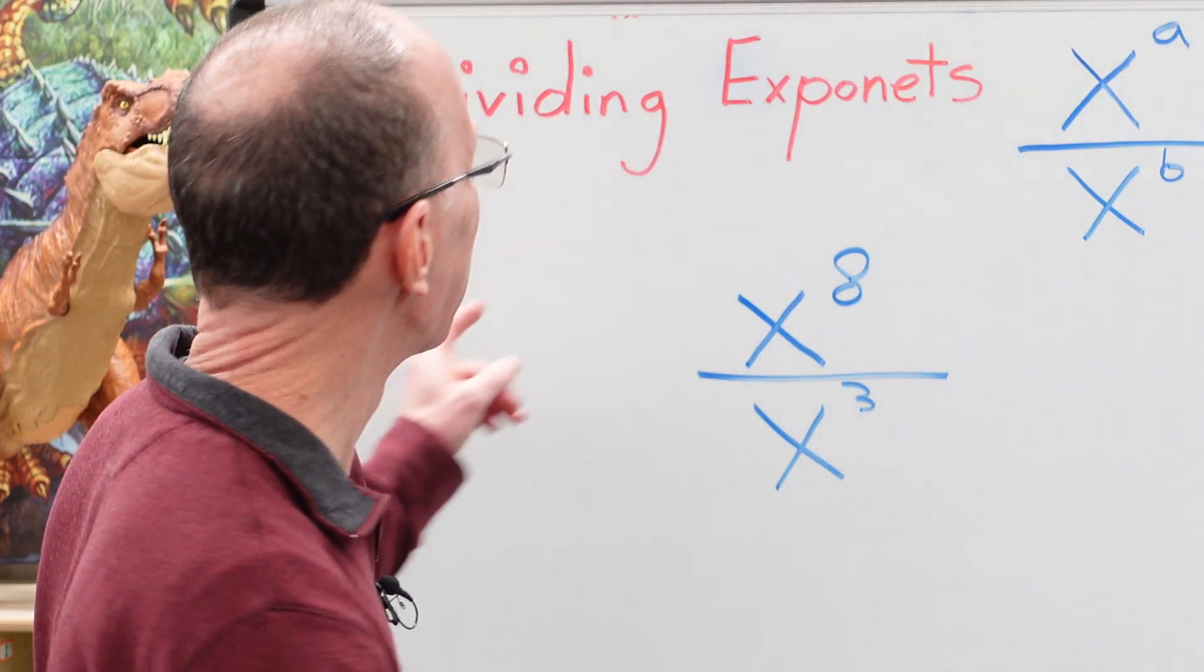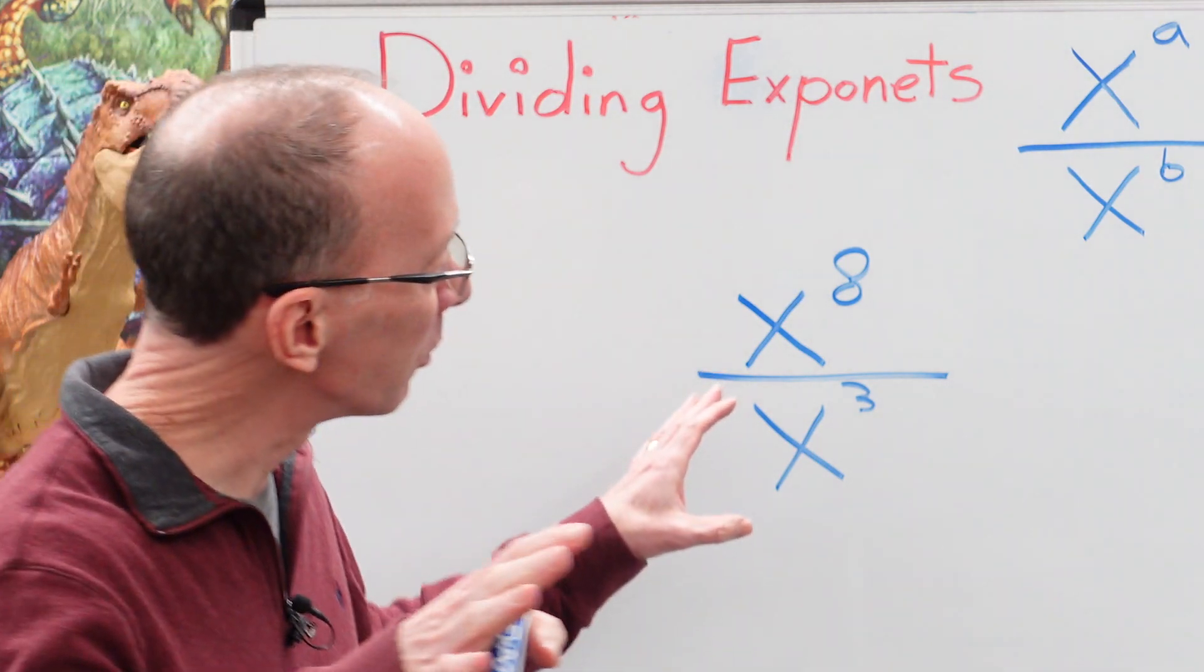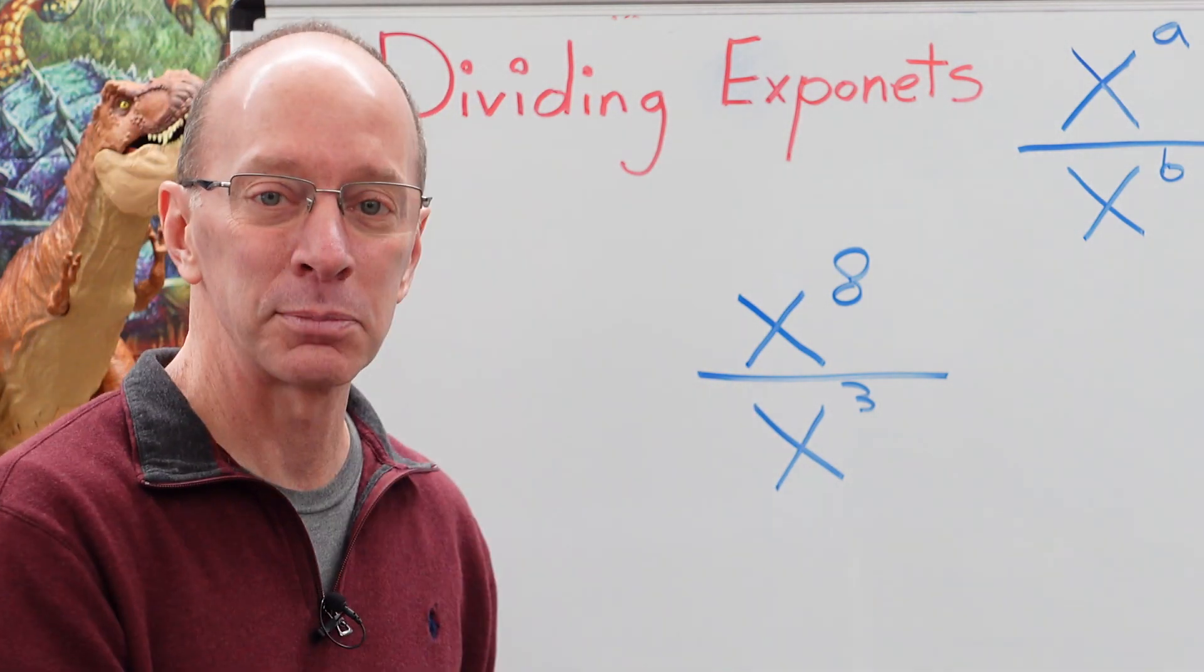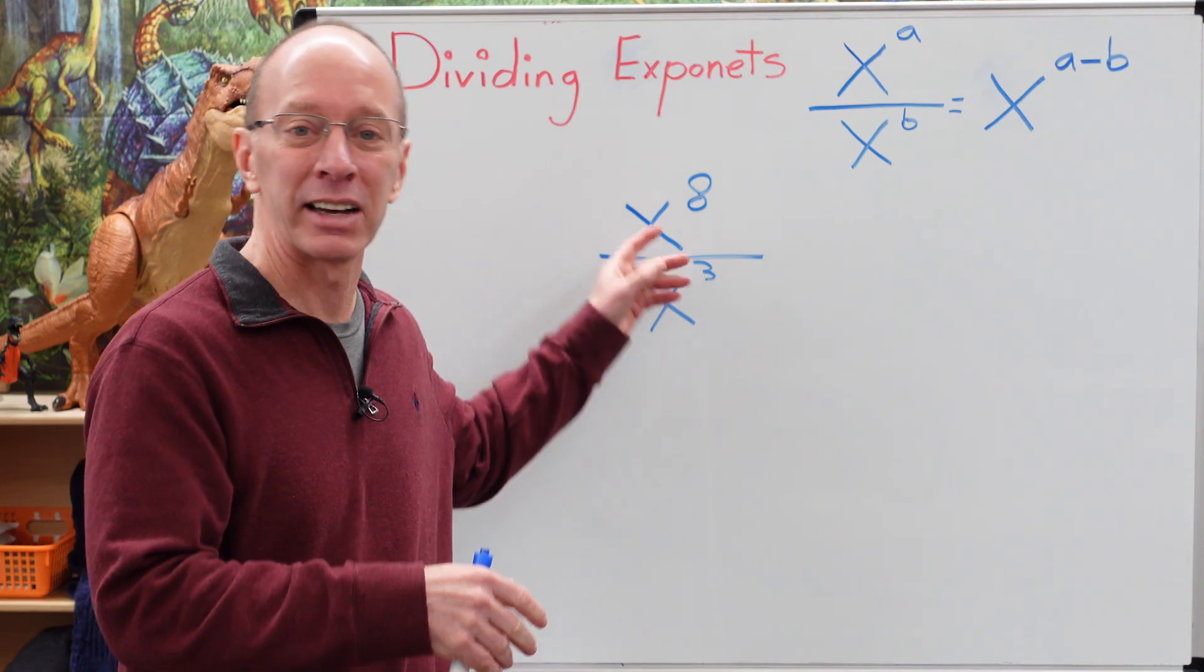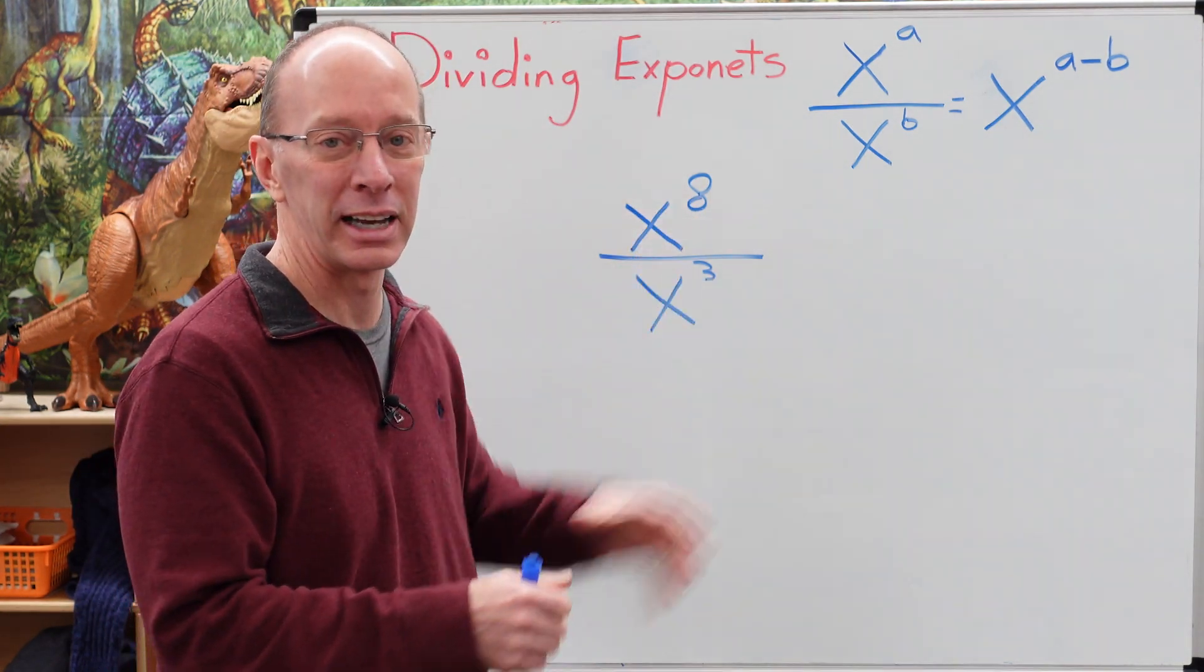Hey, let's get started. Okay, first of all, there is a rule when we divide exponents. You either have to have a common base or the exponent has to be the same.